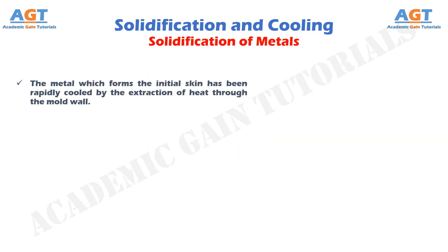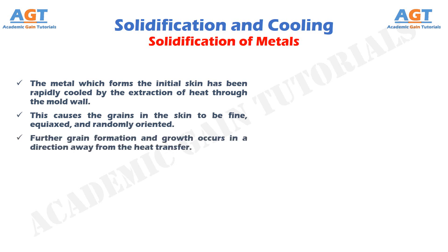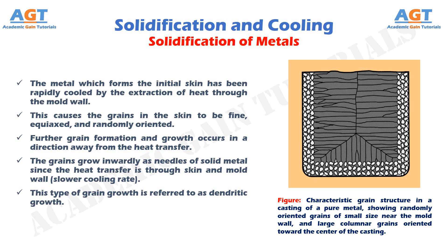The metal which forms the initial skin has been rapidly cooled by the extraction of heat through the mold wall. This causes the grains in the skin to be fine, equiaxed, and randomly oriented. Further grain formation and growth occurs in a direction away from the heat transfer. The grains grow inwardly as needles of solid metal — since the heat transfer is through the skin and mold wall — at a slower cooling rate. This type of grain growth is referred to as dendritic growth. In this figure, we can see the characteristic grain structure in a casting of a pure metal, showing randomly oriented grains of small size near the mold wall, and large columnar grains oriented toward the center of the casting.